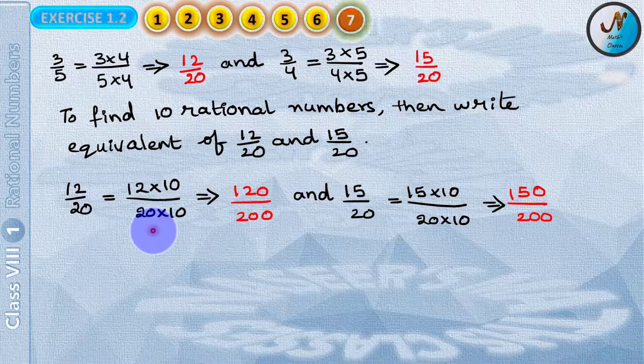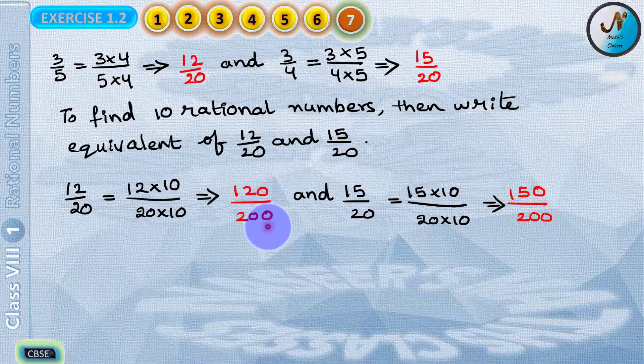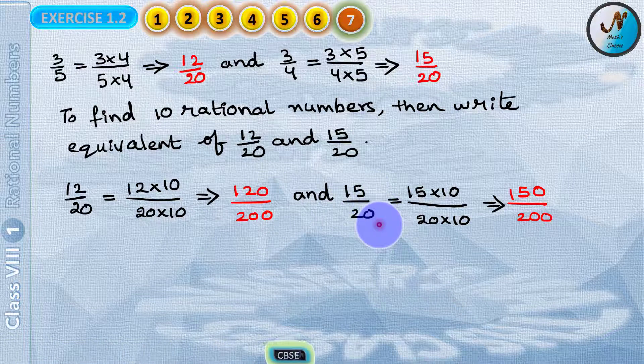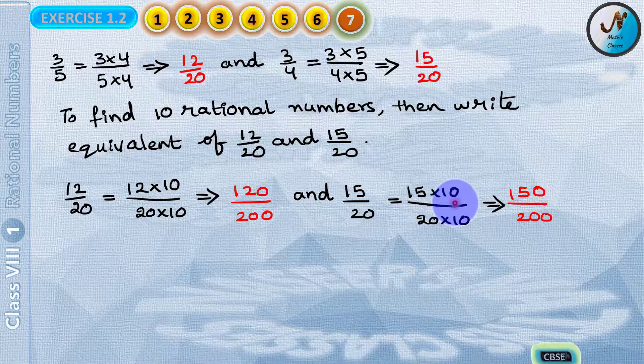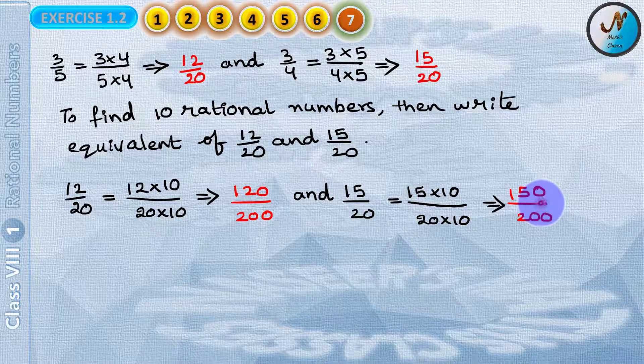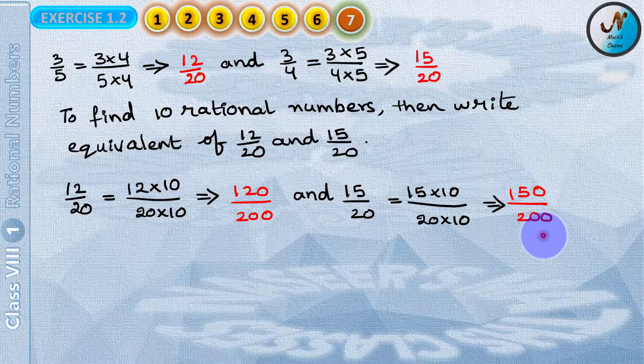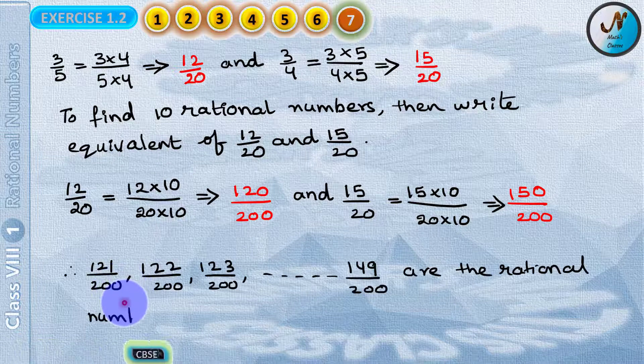So we can write 12 by 20 as 12 into 10 by 20 into 10 which implies 120 by 200, and 15 by 20 is written as 15 into 10 by 20 into 10 which can be written as 150 by 200.